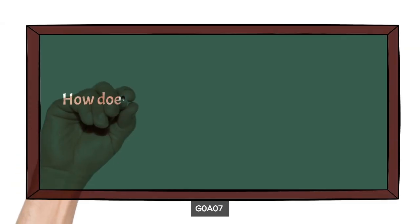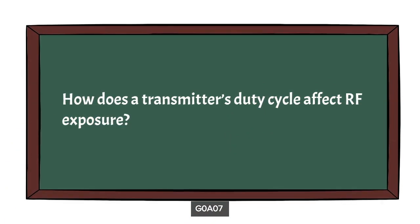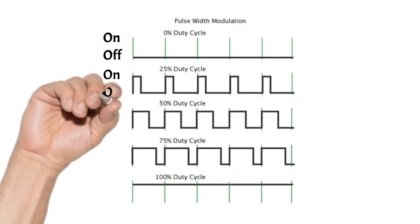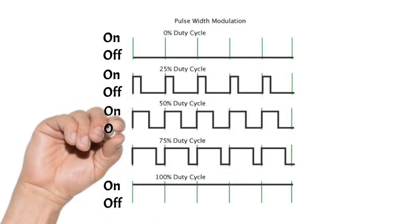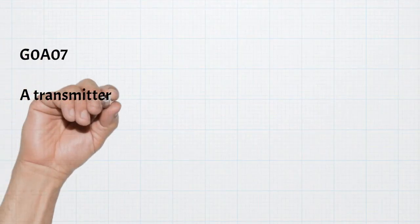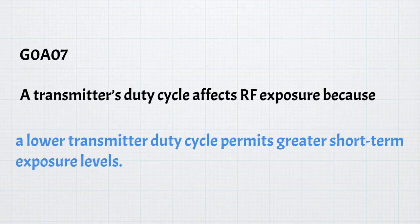For safety, we need to ask how a transmitter's duty cycle affects radiofrequency exposure. When dealing with data modes, the transmitter is keyed on and off whether there is information to be passed or not. A chart shows that at 25%, 50%, 75%, and 100% duty cycle, respectively, 100% is obviously more dangerous because you're kicking out energy 100% of the time. We need to know that a transmitter's duty cycle affects RF exposure because a lower transmitter duty cycle permits greater short-term exposure levels.